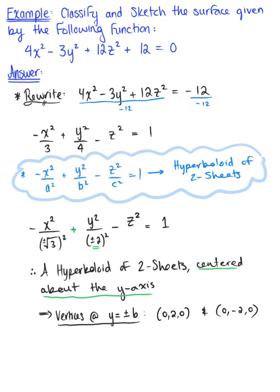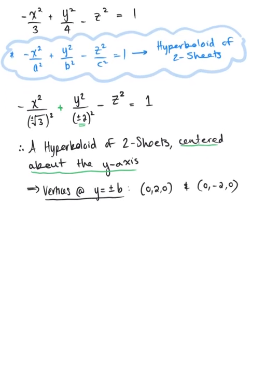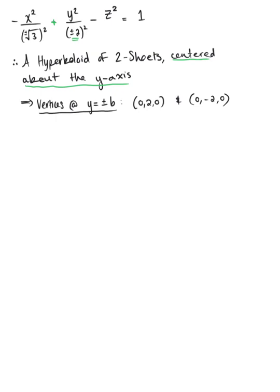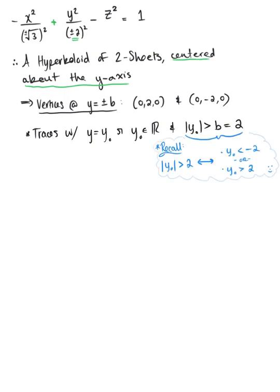And now let's also keep in mind a little bit of information about the traces associated with those hyperboloids of two sheets and their axis of symmetry. Let's also note that traces with y equal to some y-not such that y-not is an element of the real numbers and the absolute value of y-not is greater than b, so in this case greater than 2, these traces are ellipses. And then there are no traces if the absolute value of y-not is less than b, so less than 2.